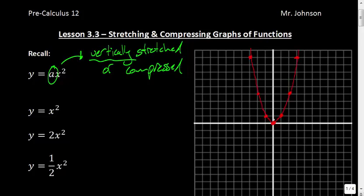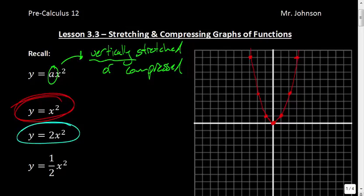We're going to compare everything to this red function right here. This blue function — y = 2x² — when our a value is greater than 1, or when a is less than negative 1, you're going to have something that has been stretched. So when a is greater than 1 — and 2 is definitely greater than 1 — we have a vertical stretch.